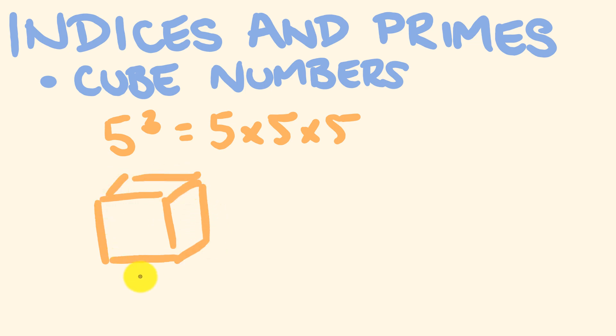the way that we would work out the volume of this cube is we would go the length times the width times the height: 5 times 5 times 5, which is equal to 125.